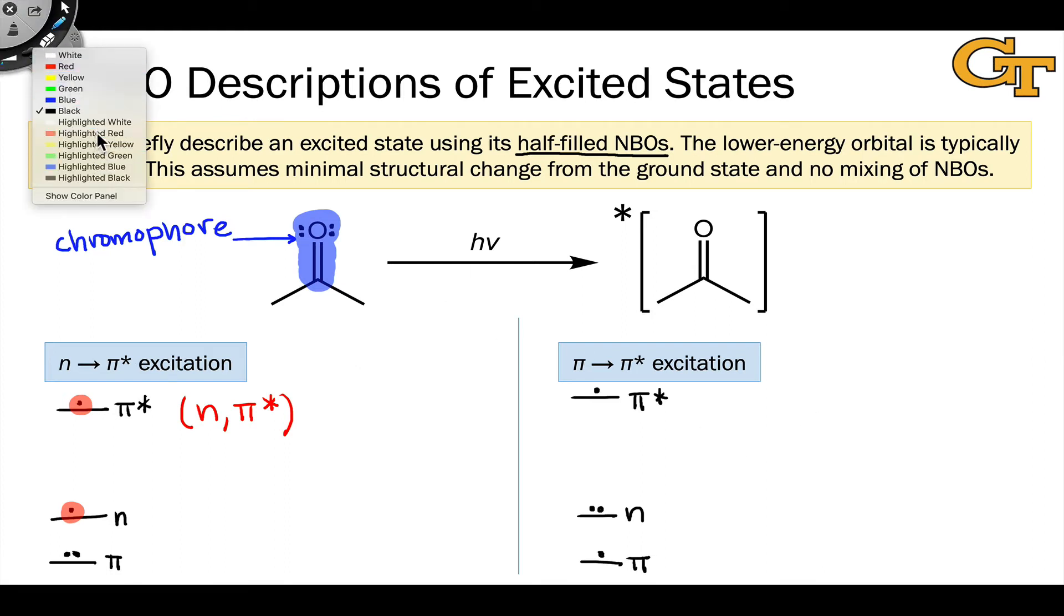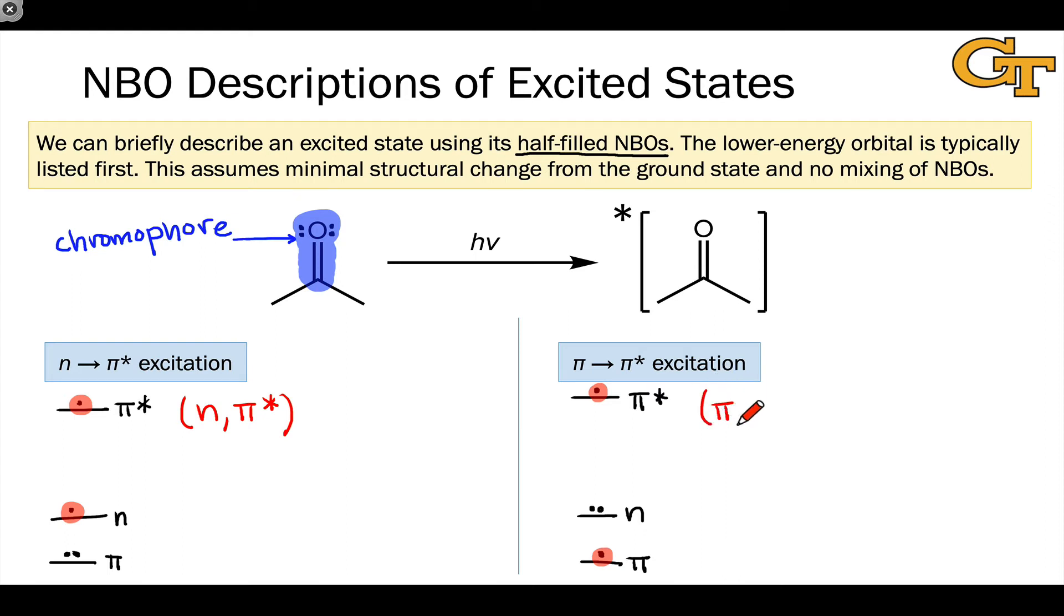Again, our emphasis here is on the SOMOs, the half-filled orbitals. This is where the business is really occurring in this excited state—on the atoms, the carbon and oxygen in particular, where the π and π* orbitals reside. Following the same convention as the n-π* excited state, we represent this as (π, π*), since the SOMOs are the π and π* orbitals.